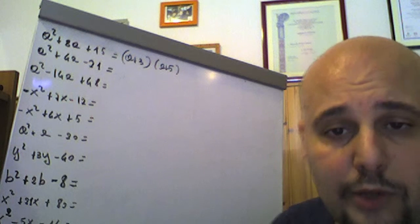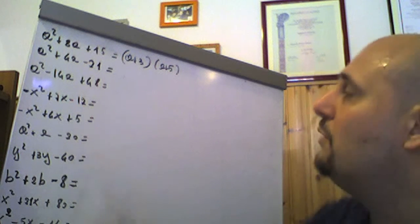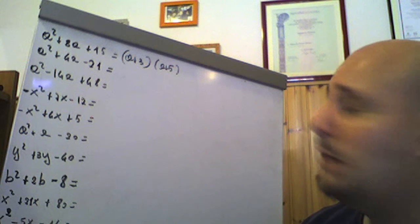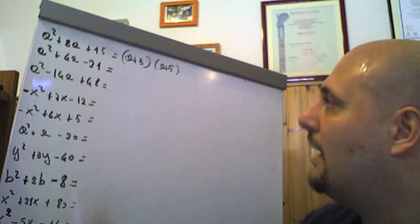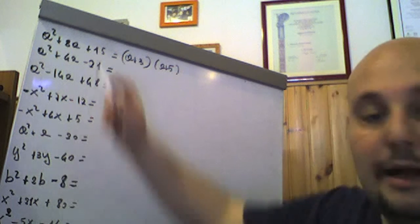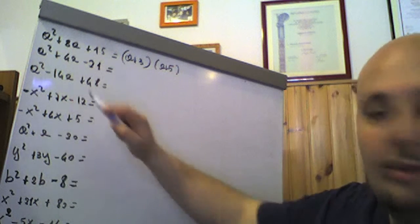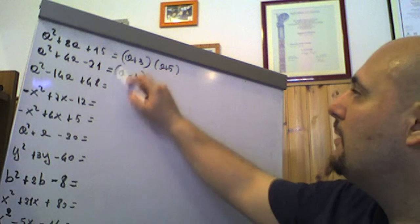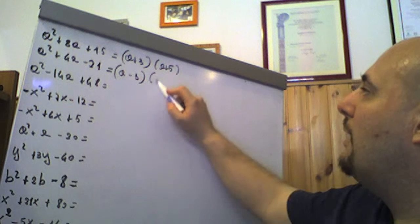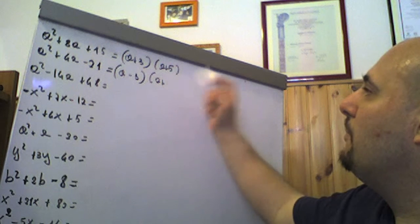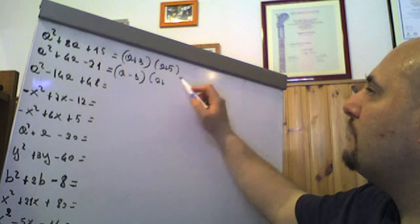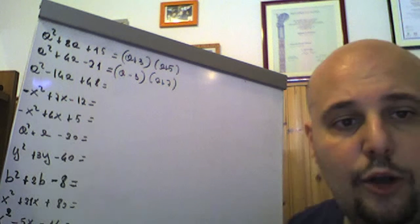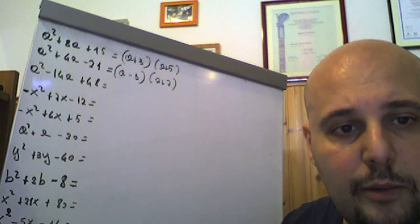A² + 4a − 21: guardiamo a −21. Abbiamo che 7 − 3 è sicuramente 4, e 7 per −3 è −21. Quindi (a − 3)(a + 7) è certamente la scomposizione di quel trinomio a² + 4a − 21.